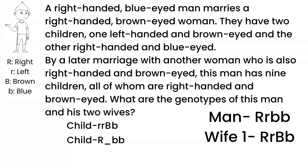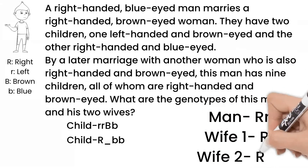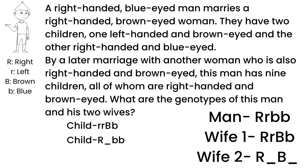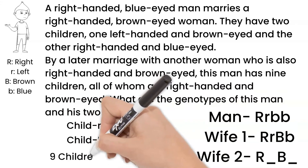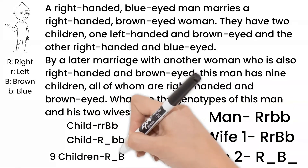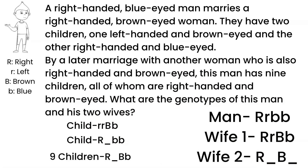The second wife starts out the same as the first: dominant alleles for both handedness and eye color. The children with her are all right-handed and brown-eyed. Now nine isn't a huge number, but it is large for humans. And as no left-handed or blue-eyed children have been born, we can assume the second wife is homozygous dominant for both traits.